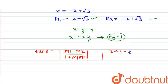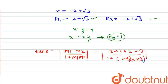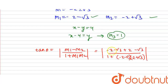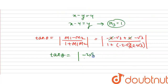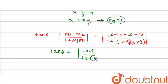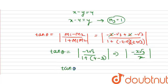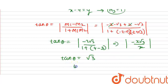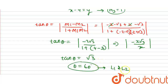Substituting m1 equals minus 2 minus root 3 and m2 equals minus 2 plus root 3 into the formula: the numerator becomes minus 2 root 3 (the minus 2 terms cancel). The denominator uses the identity (a minus b)(a plus b) equals a squared minus b squared: so (minus 2) squared minus (root 3) squared equals 4 minus 3 equals 1. So tan theta equals minus 2 root 3 divided by 2, giving minus root 3. Taking the modulus, tan theta equals root 3, so theta equals 60 degrees. The angle between line 1 and line 2 is 60 degrees.